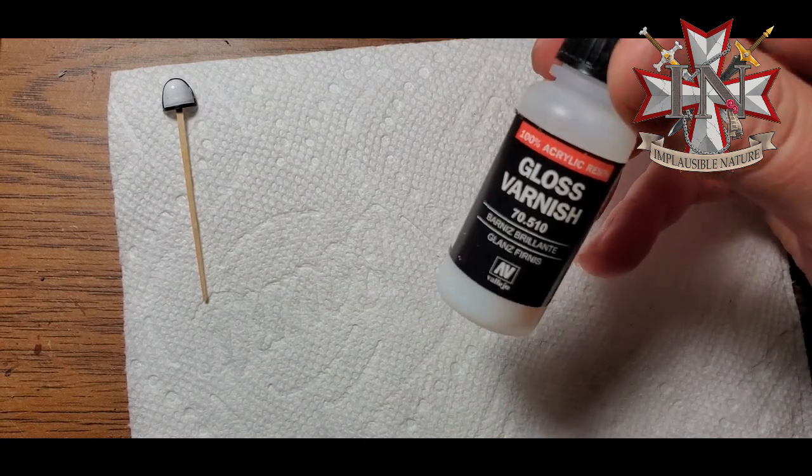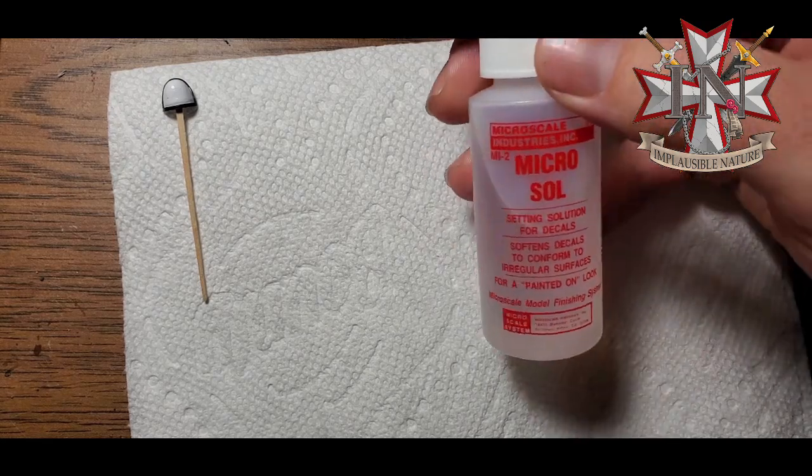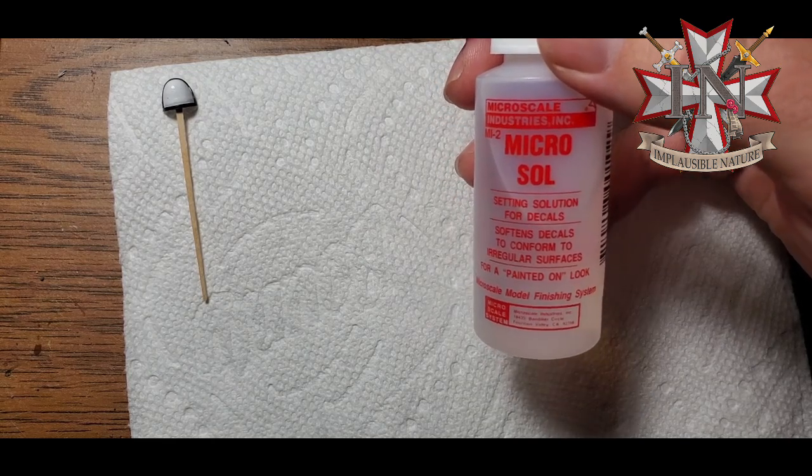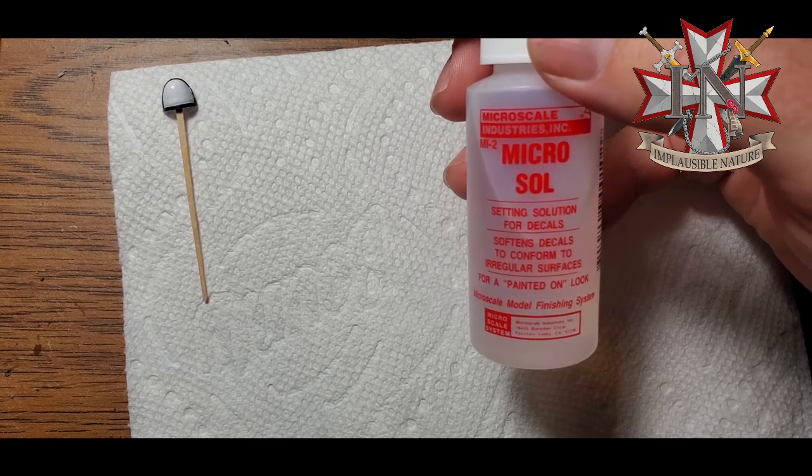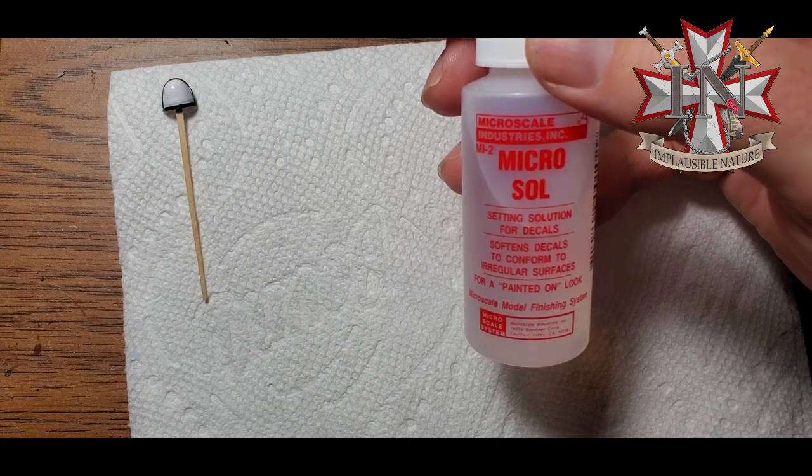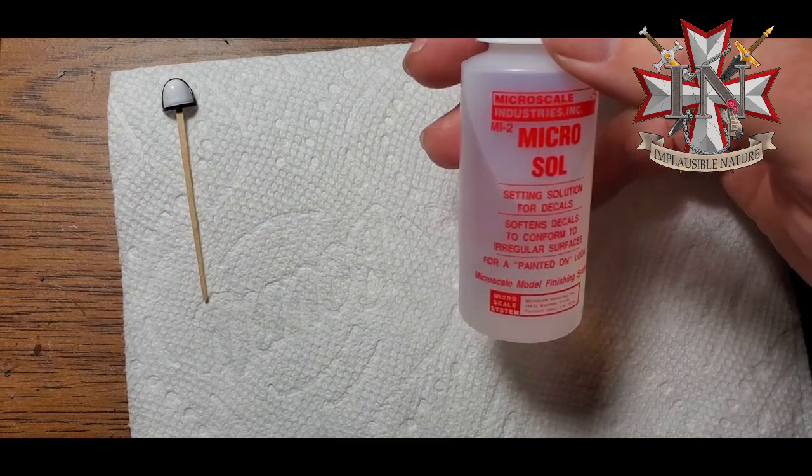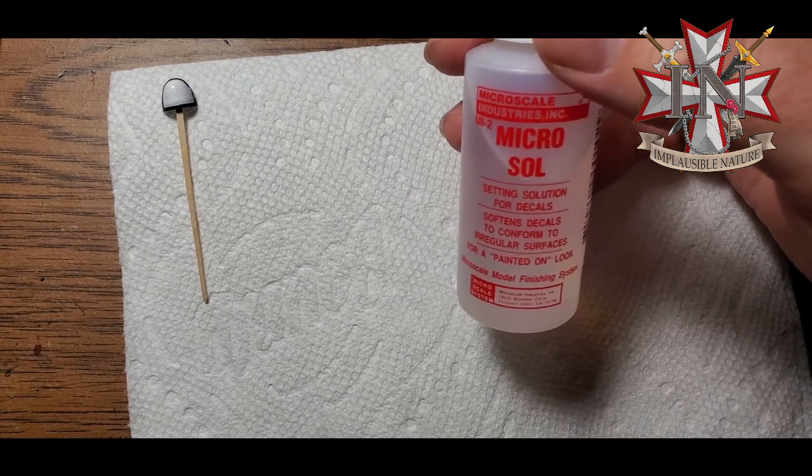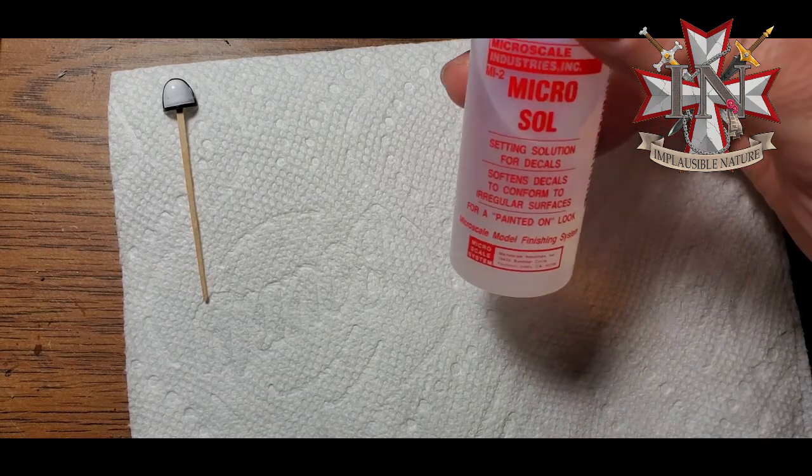And then you'll also want some Microsol. This is setting solution for decals. It will soften them so that they will conform properly to the curved surfaces of your shoulder pads or wherever you're putting it. It makes it really easy to have that really flush, nice painted on look. A lot of people also recommend Microset. I don't think it's necessary to use that if you're using the gloss varnish. The gloss varnish has the same effect and I've never had any issues. So Microsol is all I use for that.